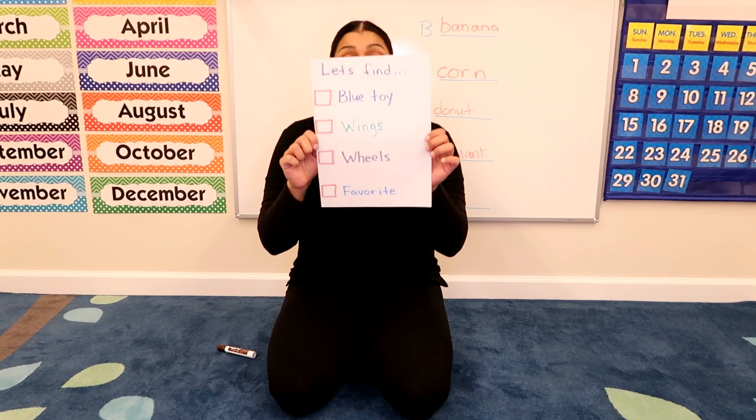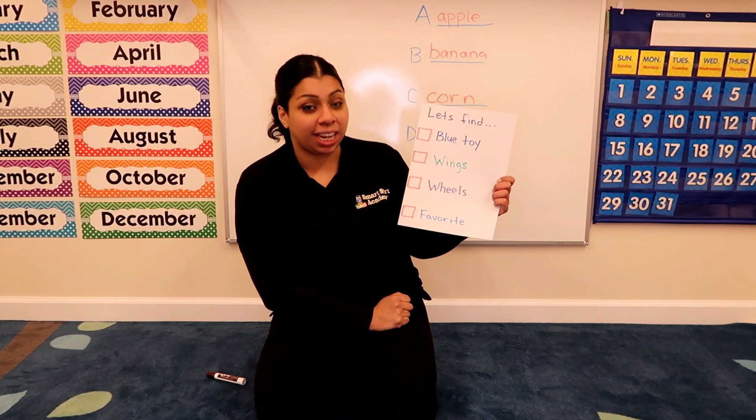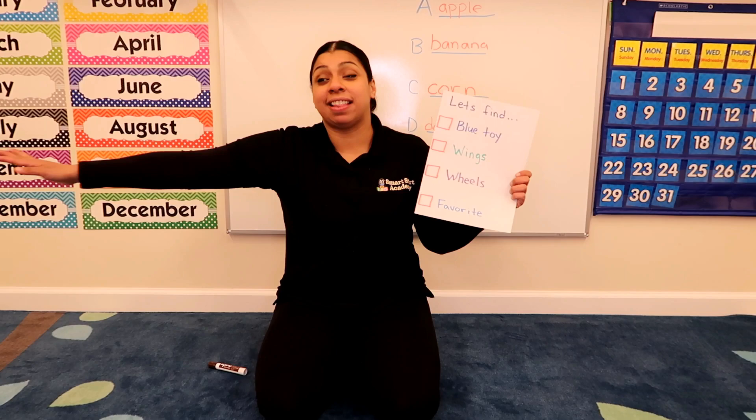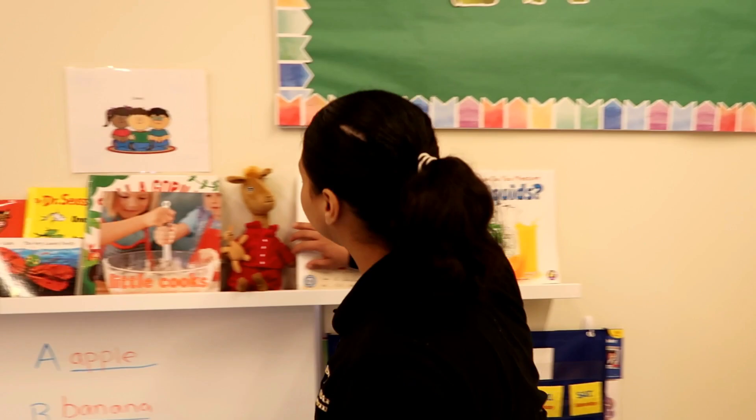We're going to play a scavenger game. See if mom and dad can help you make a list like this. We're going to find four different things: a blue toy, something with wings, something with wheels, and your favorite thing in the whole house. Let's get looking.